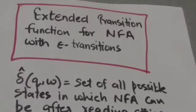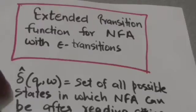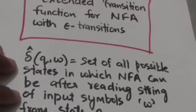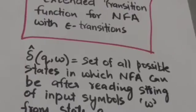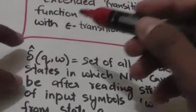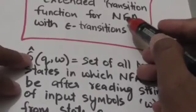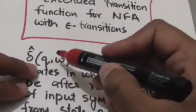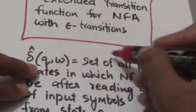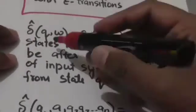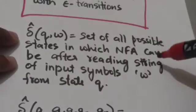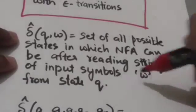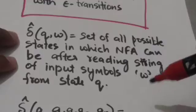Hello friends, welcome back. In this tutorial we will study the extended transition function for NFA with empty transitions. The output of the extended transition function for NFA with empty transitions, for state Q and a string of input symbols W, will be a set of all possible states in which the NFA can be after reading the string of input symbols W from state Q.